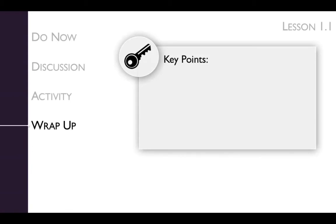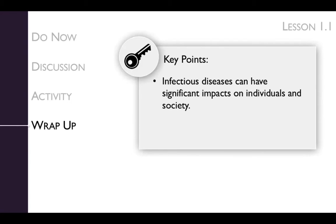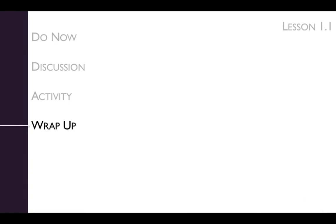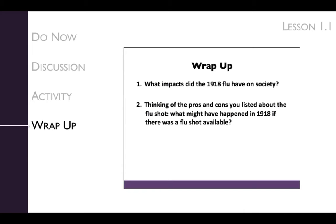The key points of the lesson's wrap-up are that infectious diseases can have significant impacts on individuals and society, and that vaccination can prevent infection and epidemics. We'll get there by having students reflect on the video clip and their answers to the questions posed earlier. In the wrap-up, students will consider two questions: What impacts did the 1918 flu have on society? And, thinking of the pros and cons you listed about the flu shot, what might have happened in 1918 if there was a flu shot available?